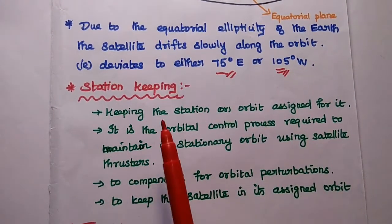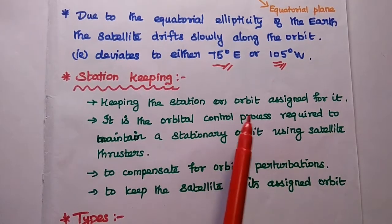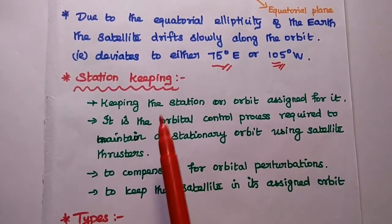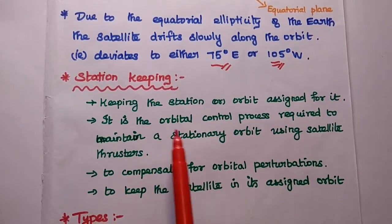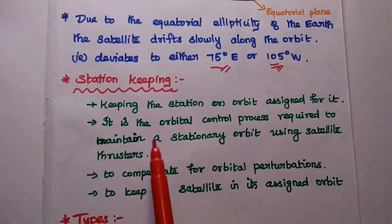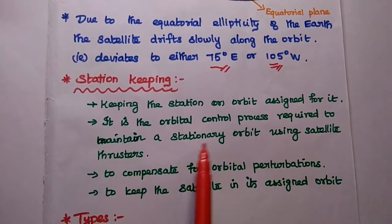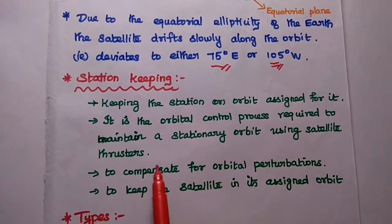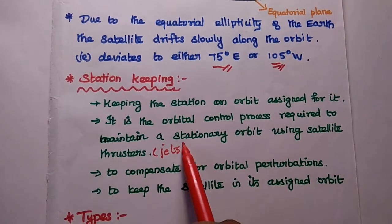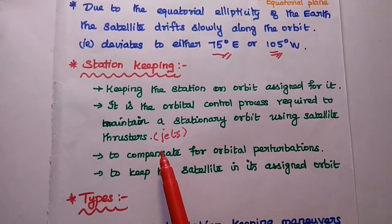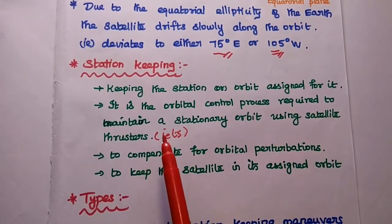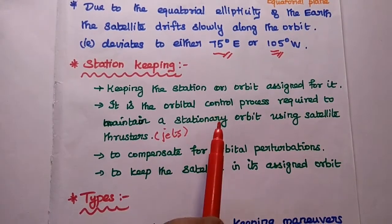Keeping the station or orbit assigned for the satellite is known as the station keeping method. It is the orbital control process required to maintain a stationary orbit using satellite thrusters. Here we are using thrusters or jets to avoid the drift due to the orbital perturbations.